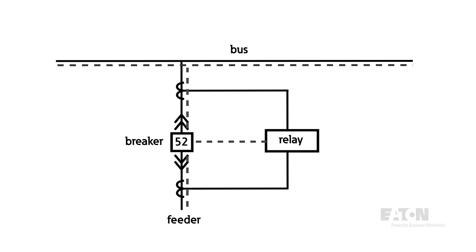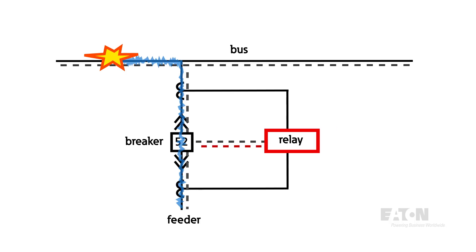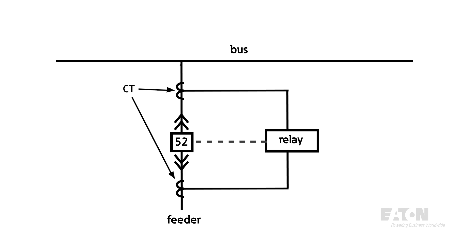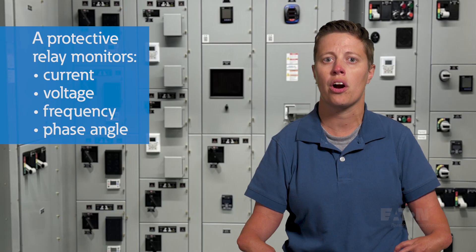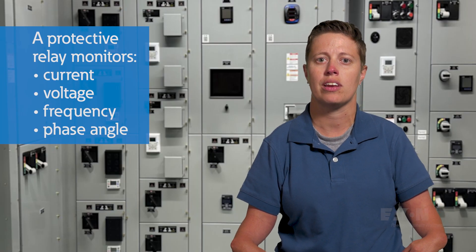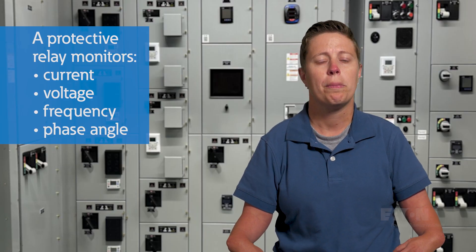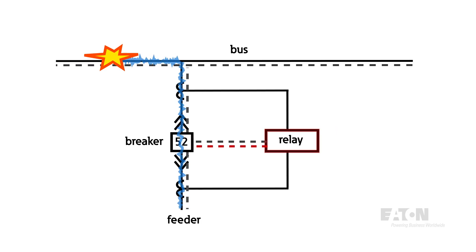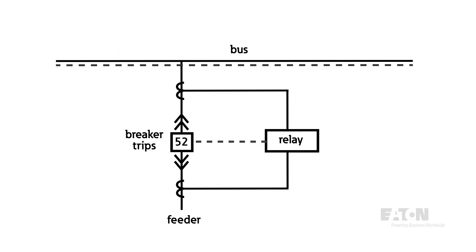A protective relay is a critical device in electrical systems. Its job is to detect abnormal or dangerous conditions like faults within the power system and then act quickly to clear the fault. Using input from current and voltage transformers, a protective relay monitors system characteristics including current, voltage, frequency, and phase angle. When power system conditions exceed set threshold limits, the relay sends a signal to the circuit breaker trip coil to trip the breaker, isolating the fault from the rest of the system.